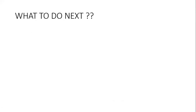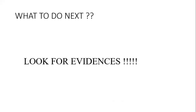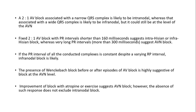It is important because you have to make a distinction whether it's nodal or infranodal. So what would you like to do in this case? Look for evidences — the right bundle is there, so infranodal disease is present. Whenever there's a 2:1 AV block with a narrow QRS, it can be nodal, but with a wide QRS it is more likely to be infranodal, though it could still be at the level of the node.